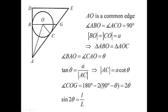As a result, I obtain that the angle COG is equal to 180° minus 2(90° minus θ) equals 2θ. Finally, I can look at the triangle ADE and observe from this triangle that sine 2θ is equal to lowercase l divided by capital L.